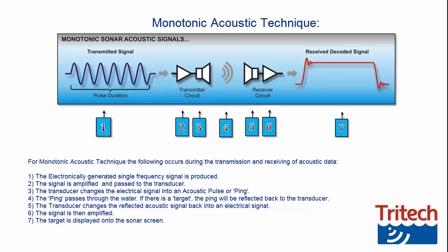Step 5: The transducer changes the reflected acoustic signal back into an electrical signal. Step 6: The signal is then amplified. Step 7: The target is displayed onto the sonar screen.